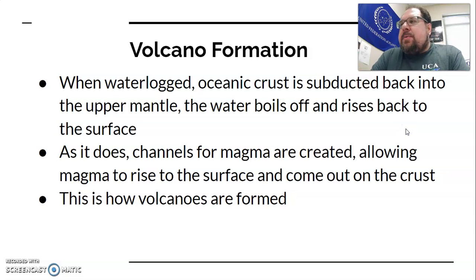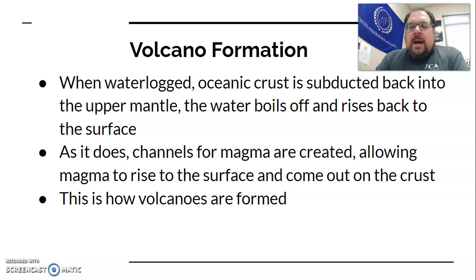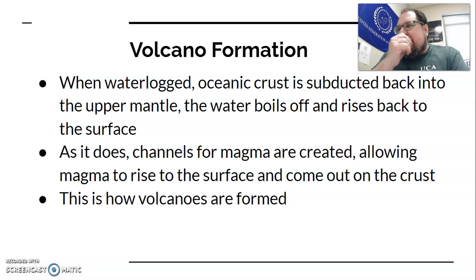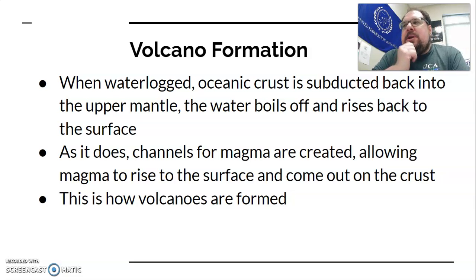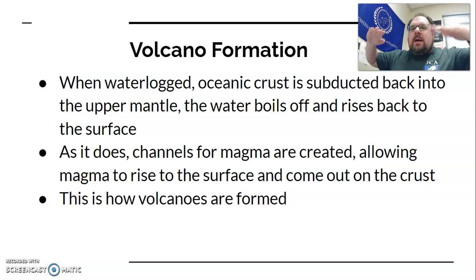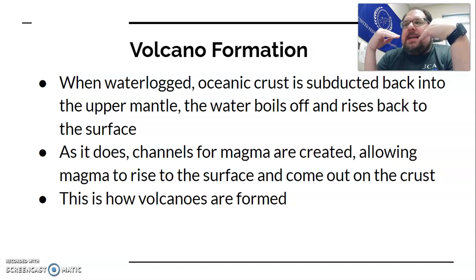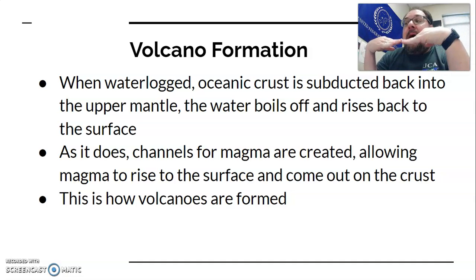So what happens when you've got plate boundaries interacting? Volcanoes can form at any plate boundary — they don't have to just form at one type. But typically you're more likely to see them at convergent boundaries. You do occasionally see them at transform and divergent boundaries, but usually they're found at convergent boundaries. Convergent means the plates are coming together. Typically, you've got to have at least one of the two crusts be oceanic crust — if you have two continental plates converging, you're going to get mountains but not volcanoes.